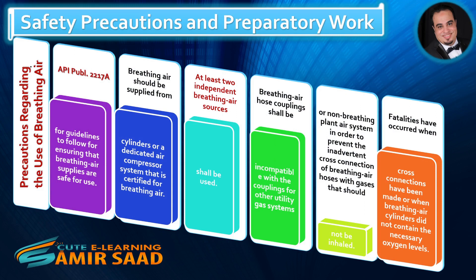Regarding the use of breathing air, refer to API Publication 2217A for guidelines to ensure that breathing air supplies are safe for use. Breathing air should be supplied from cylinders or a dedicated air compressor system certified for breathing air. At least two independent breathing air sources shall be used. Breathing air hose couplings shall be incompatible with couplings for other utility gas systems or non-breathing plant air systems to prevent inadvertent cross-connection. Fatalities have occurred when cross-connections have been made or when breathing air cylinders did not contain the necessary oxygen levels.